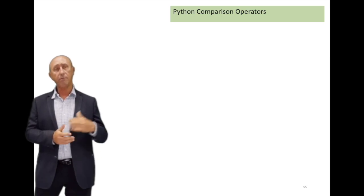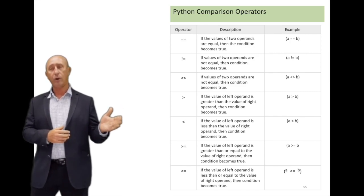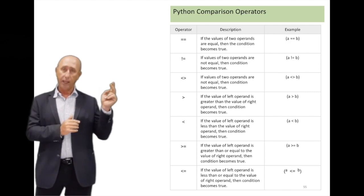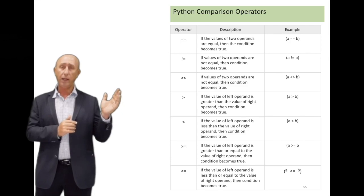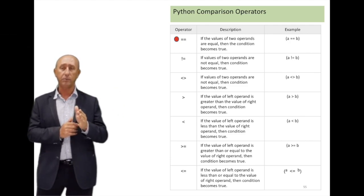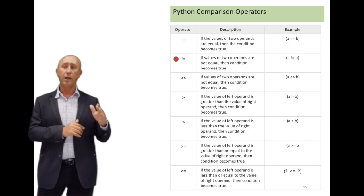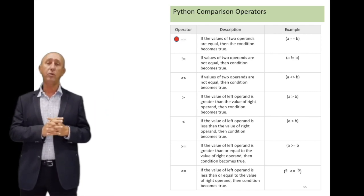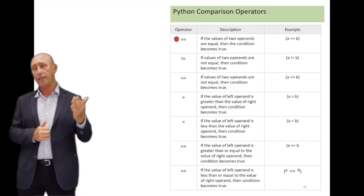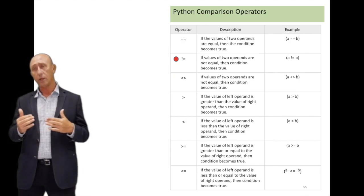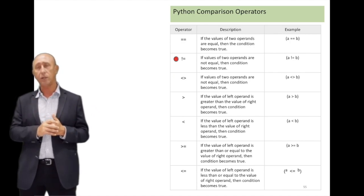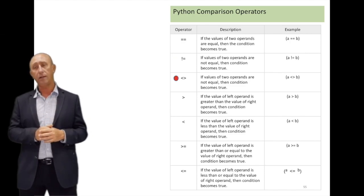Inside the condition brackets, you compare two values. For example, to check if a equals five, you use double equals: a == 5. If you want to compare two variables, you say a == b. For not-equal comparison, you use the exclamation mark and equals (!=), or you can use less-than combined with greater-than. This means one value is not equal to another value.